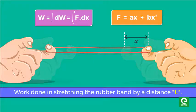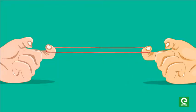Therefore, we can find the total work done by integrating this from distance 0 to L, substituting the given relation for F.